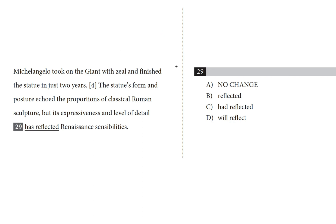One of our top tips with verb tense questions is to look closely at the tenses of the other verbs in the paragraph to see what we can learn. In this paragraph alone, I see 'took,' 'finished,' 'echoed' — all the other verbs in these two sentences are in the past tense.